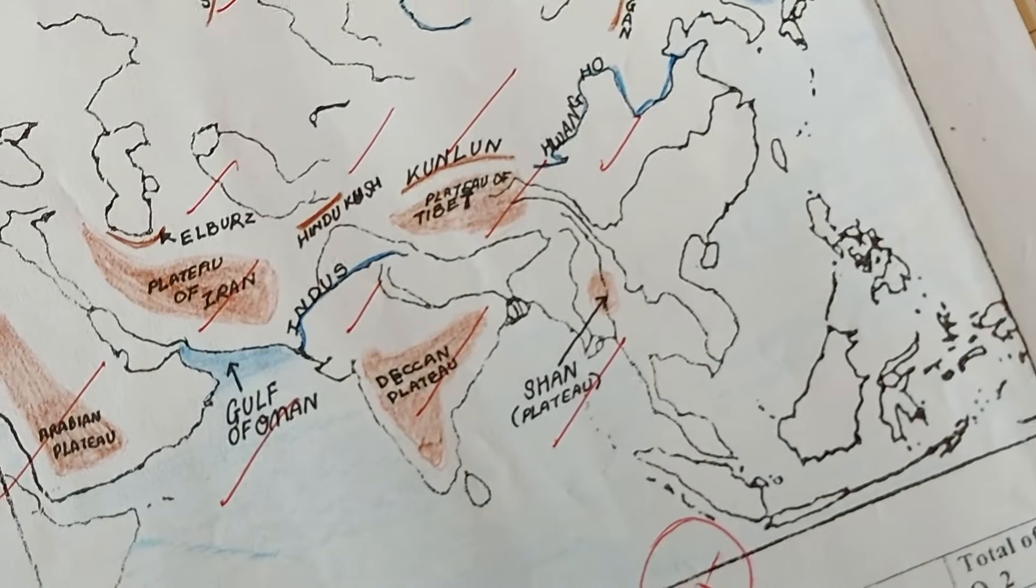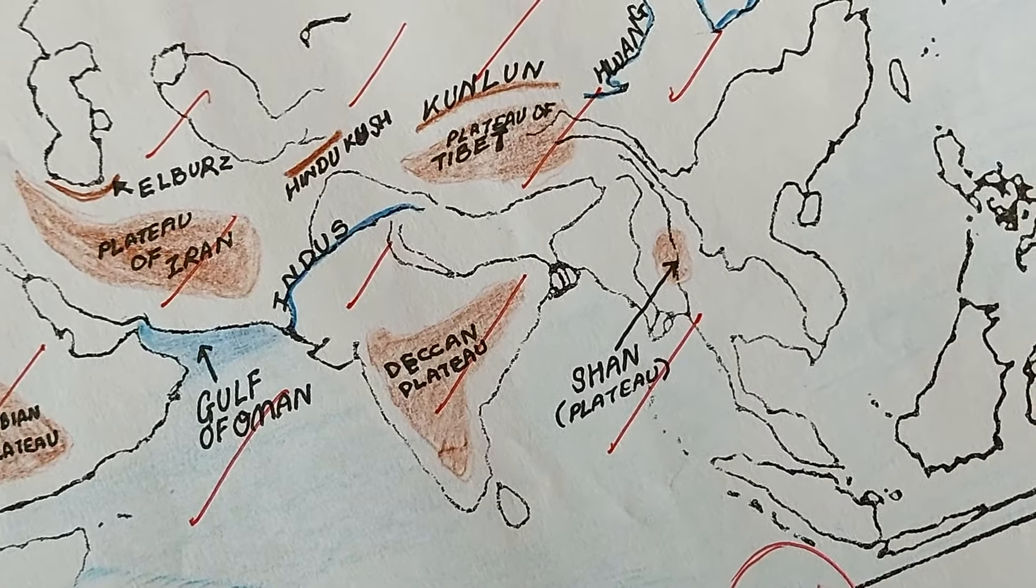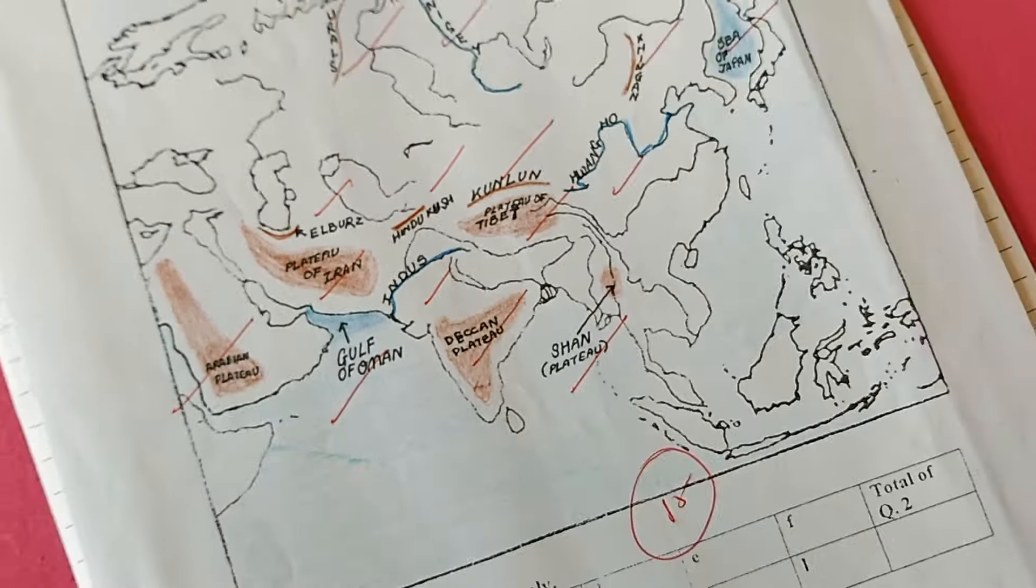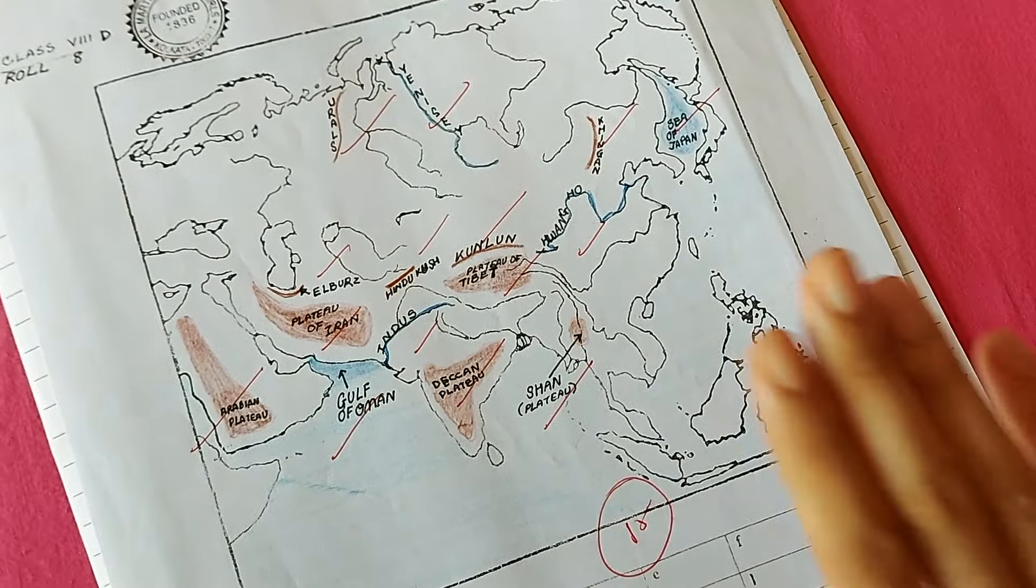For maps, I would tell you, just be careful. Rivers with blue, mountain ranges and plateaus with brown. You should learn these very nicely because this is very scoring, so you can easily score good marks.